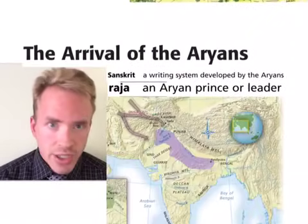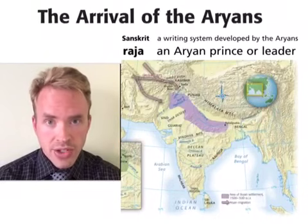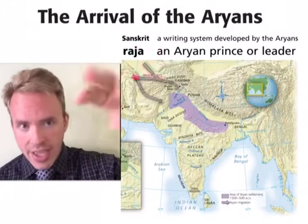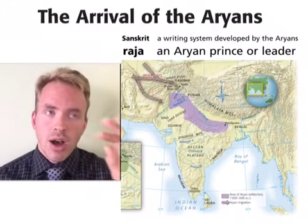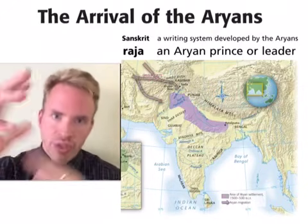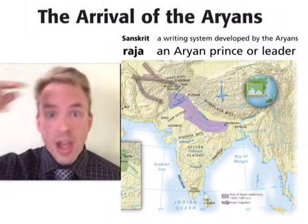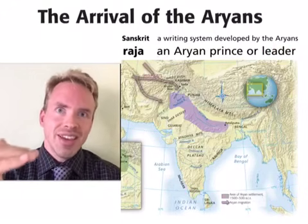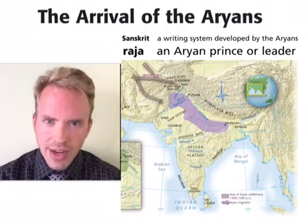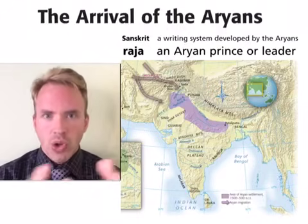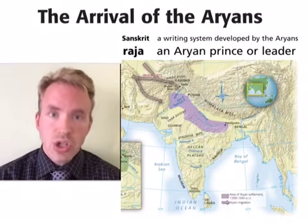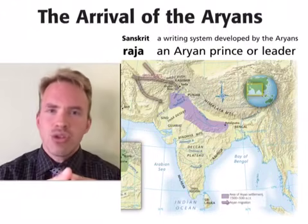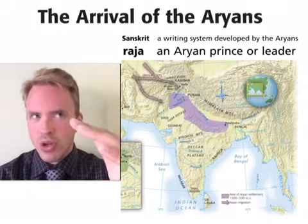Around 1500 BC, the Aryans arrive in Southern Asia. The Aryans is our word for these nomadic people that came from central Asia down into southern Asia. They brought with them distinct cultural elements that became infused with everyone already living in India. Importantly, they brought Sanskrit, a language we can read, so now we can start understanding a lot more of the history. They also brought their own political structures, including having a king called a Raja over a certain area.